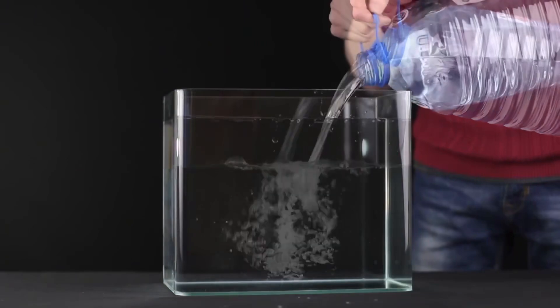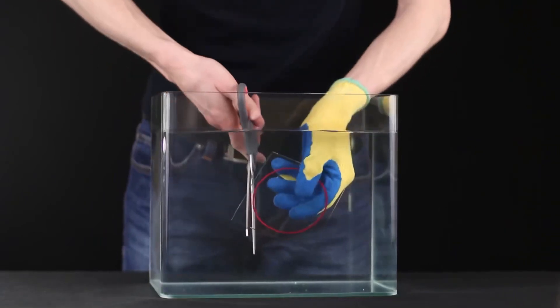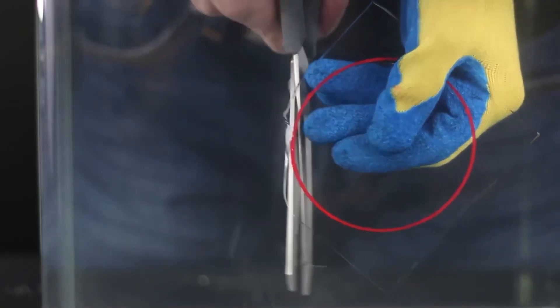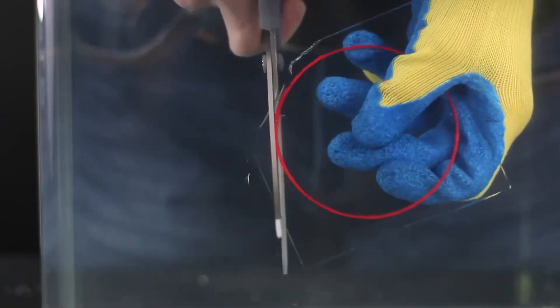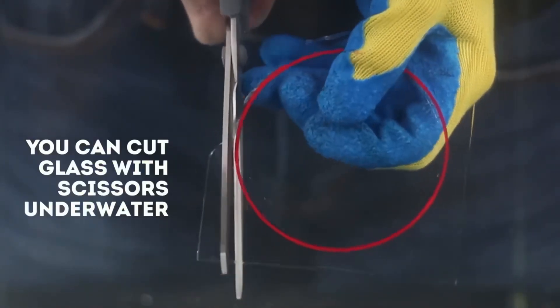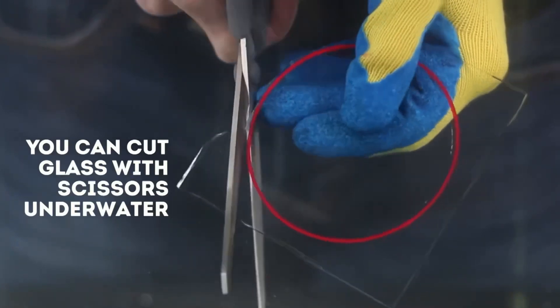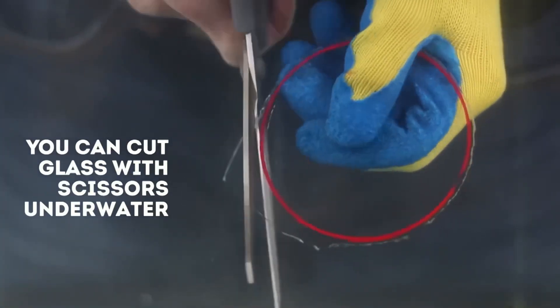Fill the aquarium with water and put a piece of glass inside with a drawn circle. Let's take scissors and, attention, now cut the circle out of the glass. Yes, you heard it right, underwater you can cut glass with scissors. It's not as easy as cutting paper, but it's possible.